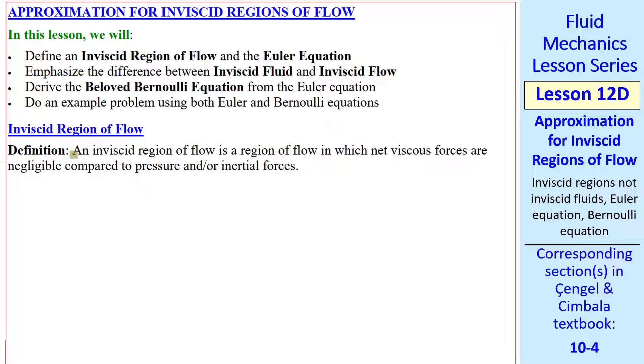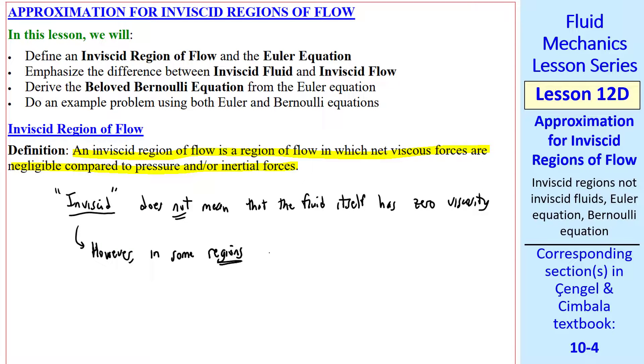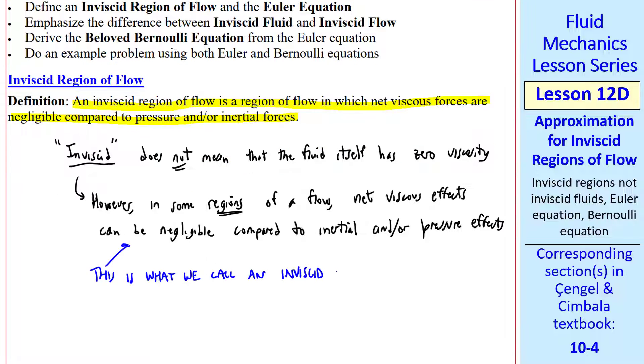Here's the definition of an inviscid region of flow. It's a region of flow in which net viscous forces are negligible compared to pressure and or inertial forces. But be careful with the nomenclature. Inviscid does not mean that the fluid itself has zero viscosity. All fluids have viscosity. However, in some regions of flow, net viscous effects can be negligible compared to inertial and or pressure effects. This is what we call an inviscid region of flow.